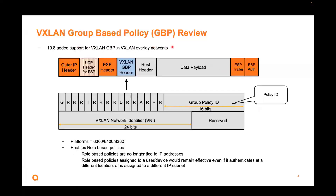Let's do an overview of VXLAN GBP, or Group Based Policy. This was added in 10.8. In the VXLAN header, this Group Policy ID is now available for usage on three platforms. This enables role-based policies where policies are no longer tied to IP addresses — when your device authenticates at a different location or even a different IP subnet, those role-based policies can take effect.